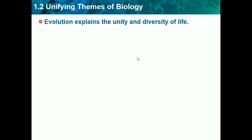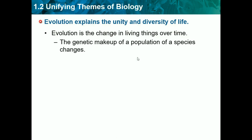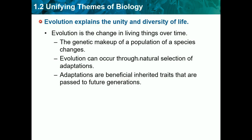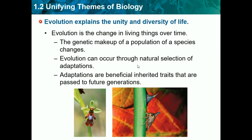Evolution explains the unity and diversity of life. Evolution is the change in living things over time. The genetic makeup of a population of species actually changes over time through evolution. Evolution can occur through natural selection of adaptations. Adaptations are beneficially inherited traits that are passed to future generations. Evolution happens through natural selection, where nature naturally selects certain adaptations or animals to survive. We'll use giraffes as an example.